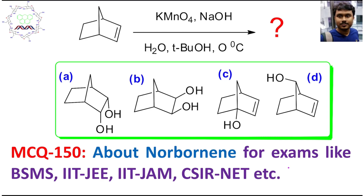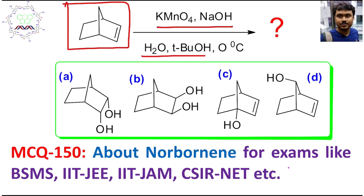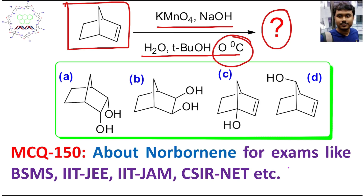This is a bicyclic compound reacted with potassium permanganate, sodium hydroxide, water-butanol, produced at 0 degrees centigrade. What is the product? This condition is actually KMnO4 oxidation of an alkene under milder conditions — diluted KMnO4 at 0 degrees centigrade — and is expected to produce a diol.